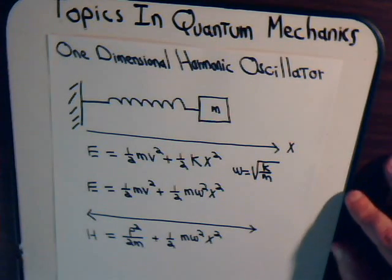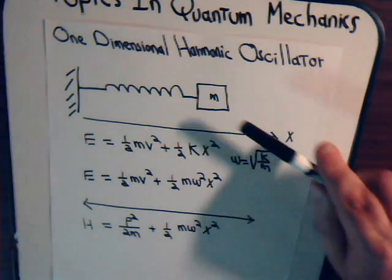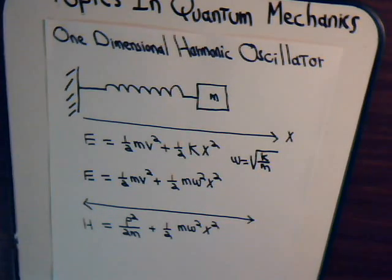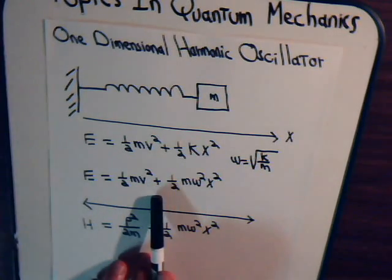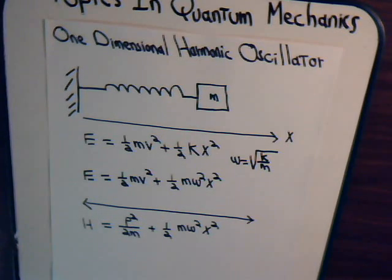And the angular velocity, considering it in that context, is equal to the square root of the spring constant divided by the mass. So we can rewrite the equation where the total energy is one-half mv squared plus one-half m omega squared x squared.